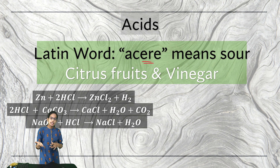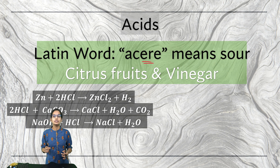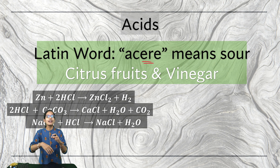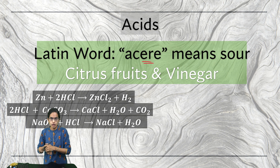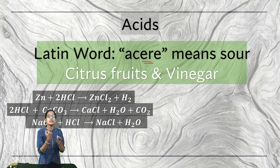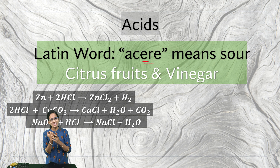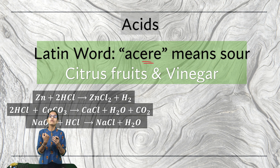Similarly, you have lactic acid in milk. Even in animals, there is formic acid. You might have witnessed an ant bite or an insect bite sometime and then you have a certain kind of swelling on the skin. That is because of the acid released by the insect on your hand — this is formic acid.